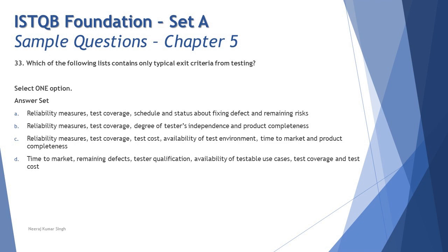Option A says: reliability measures, test coverage, schedule, and status about fixing defects and remaining risk. All these look quite understandable as part of exit criteria - fixing a defect is a concern when determining how many defects can remain open or how many bugs should be closed before closing testing. Remaining risk that you could not mitigate would certainly be part of exit criteria.